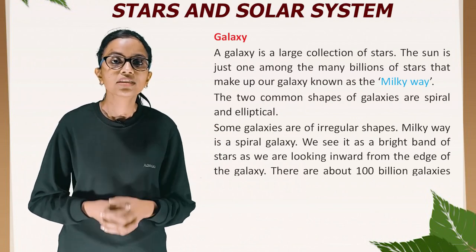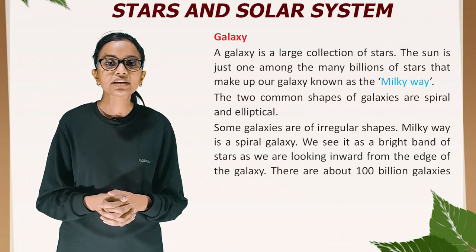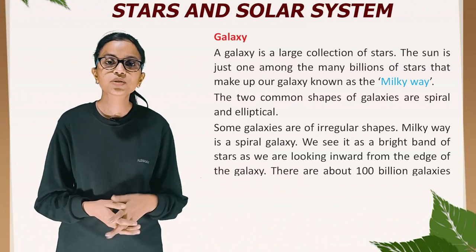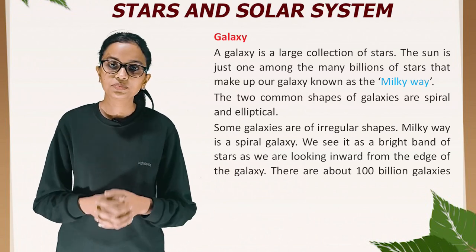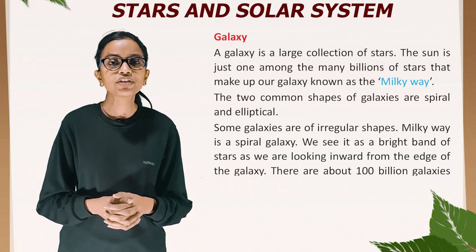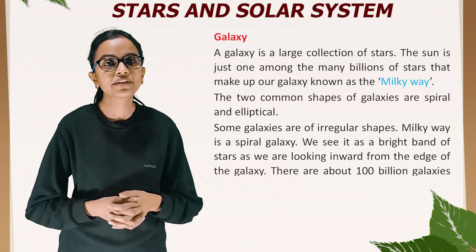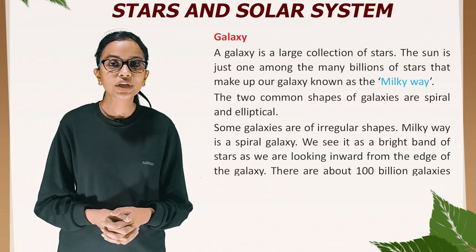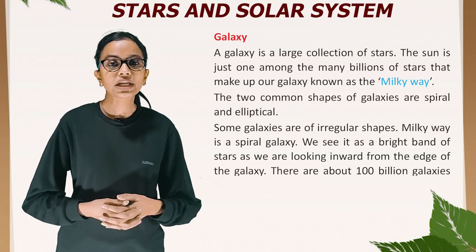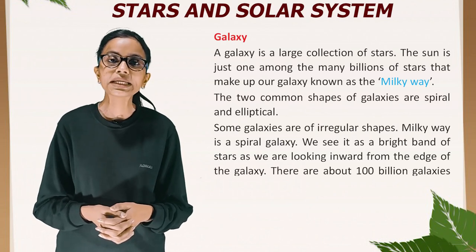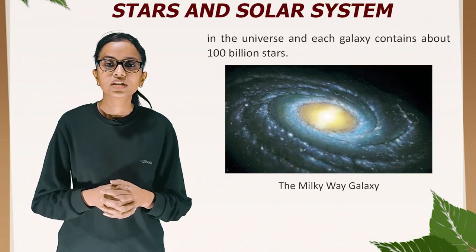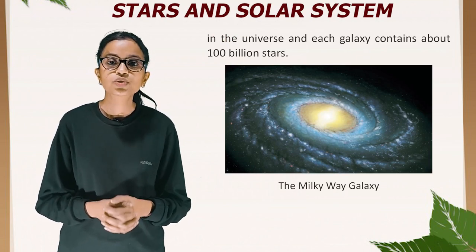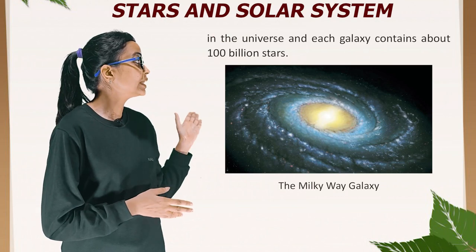A galaxy is a large collection of stars. The Sun is just one among the many billions of stars that make up our galaxy, known as the Milky Way. The two common shapes of galaxies are spiral and elliptical; some galaxies are of irregular shapes. The Milky Way is a spiral galaxy, and we see it as a bright band of stars as we are looking inward from the edge of the galaxy. There are about 100 billion galaxies in the universe, and each galaxy contains about 100 billion stars.